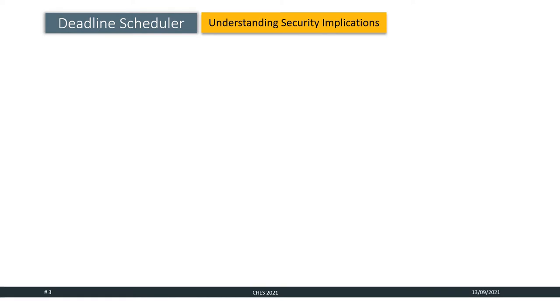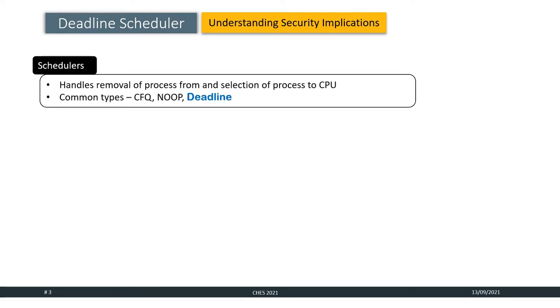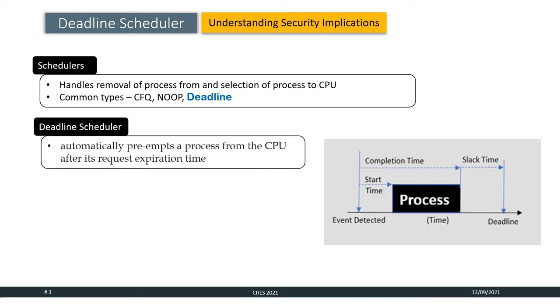Before going into the details of our work, I would like to talk about the Deadline Scheduler and try to understand its security implications. Schedulers, as we know, handle removal of processes from and selection of processes to the CPU. There are many types of schedulers with the common types being CFQ, NOOP and the Deadline Scheduler.